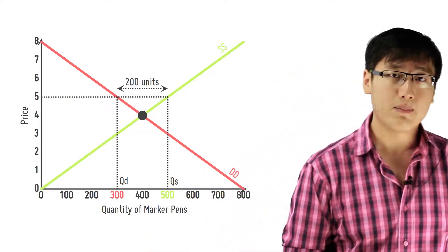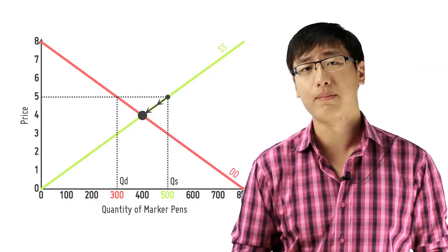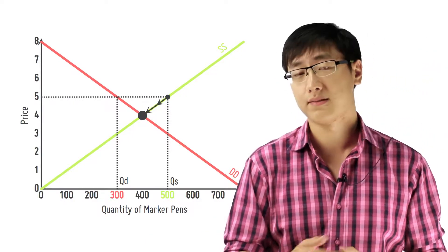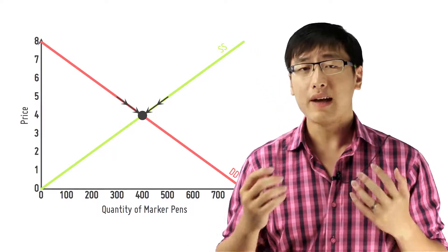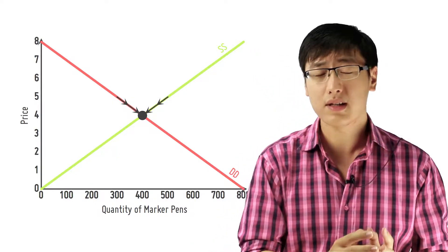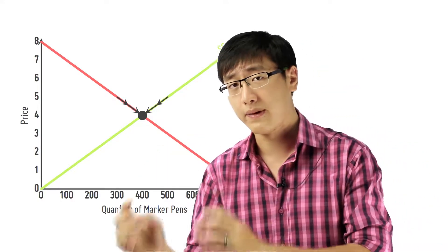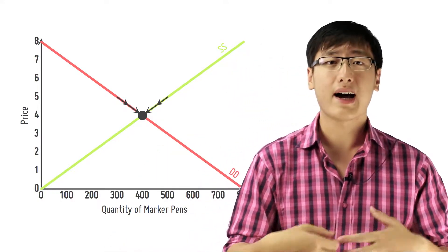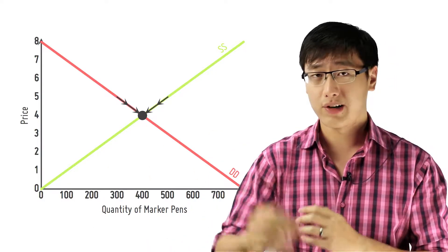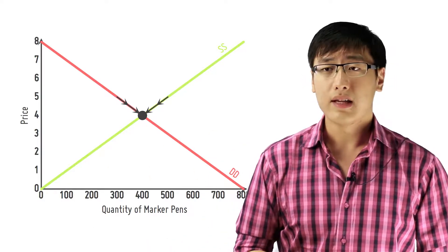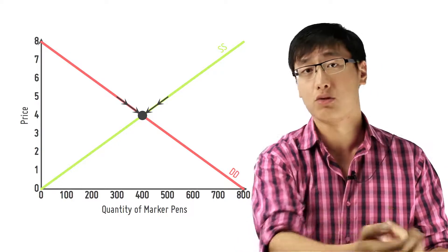So the producers think, maybe I should not produce that many and maybe I should lower the price. So instead they lower to 400. So at 400, that is when the quantity demanded equals the quantity supplied. So when the price is higher than the equilibrium price, what happens is that the suppliers actually lower the price and eventually consumers will start consuming more. The quantity demanded increases and that's what happens.